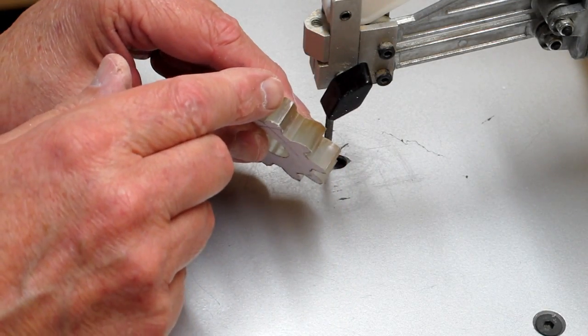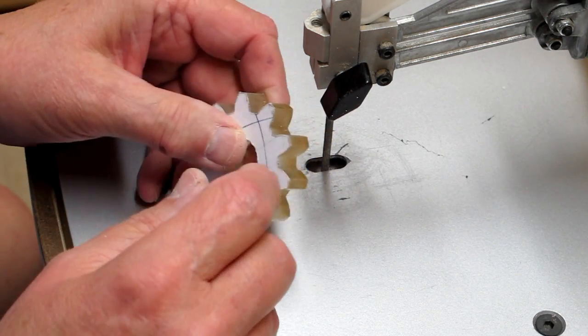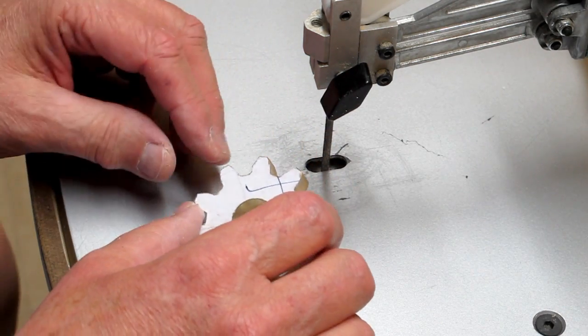Before I remove the backing sheet, I'm going to go in and file the corner of these teeth just to break that sharp edge so that it won't chip out later.